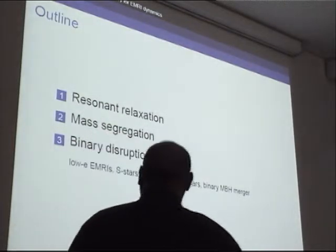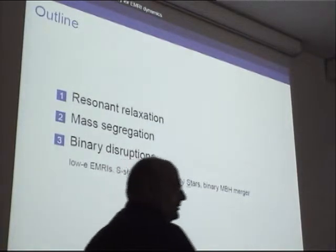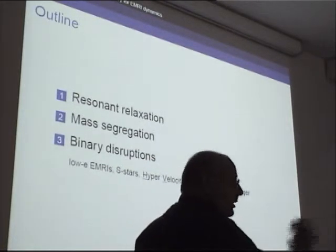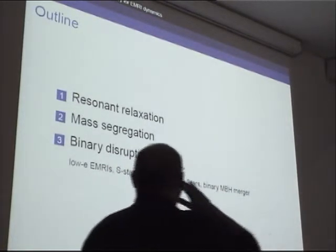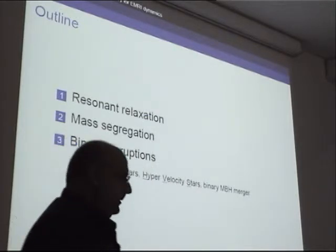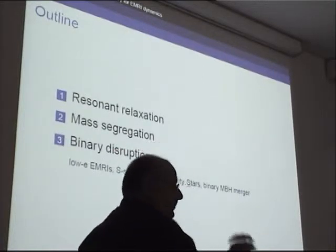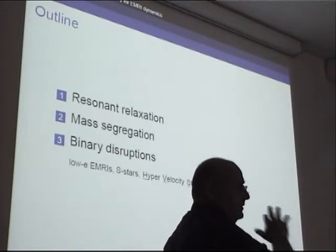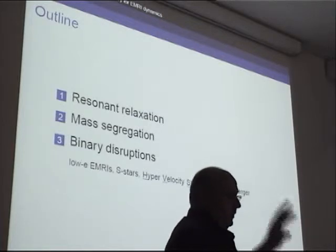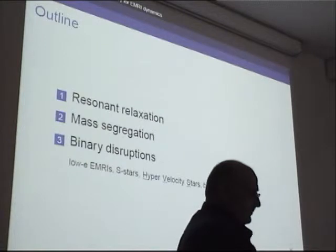This ties together many different things that we want to observe and are already observing in the galactic center: low eccentricity EMRIs, the S stars — those mysterious cluster of stars right on top of the black hole — a new class of objects causing a lot of excitement in the past two years, the high velocity stars in our galaxy, and perhaps a comment about the relevance of this dynamical process to equal mass mergers and the binary massive black hole merger problem.